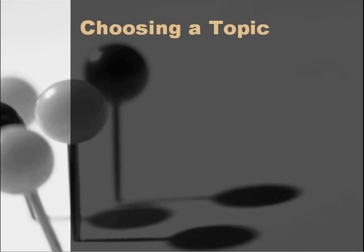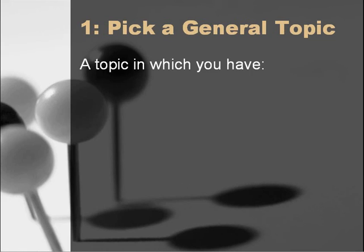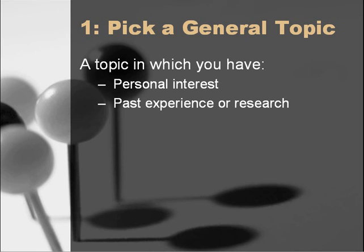With that information as background, let's walk through the three main steps in choosing and refining a research paper topic: choosing, filtering, and questioning. First, choosing. Try to choose a topic that has aroused your interest — some issue you've connected with more than others. Personal motivation is a huge factor in how well you will write and how easy or difficult the writing will be. The next criterion: previous experience or research. Familiarity can save you time and headache as you work on this project, so take advantage of it if you can.